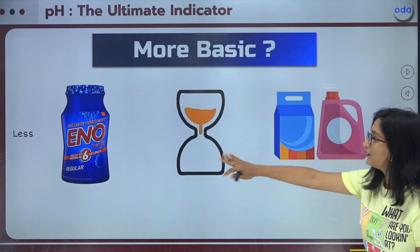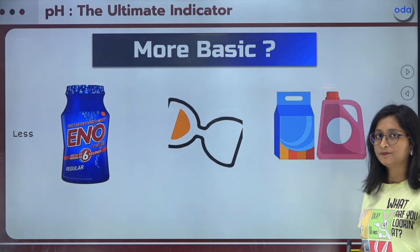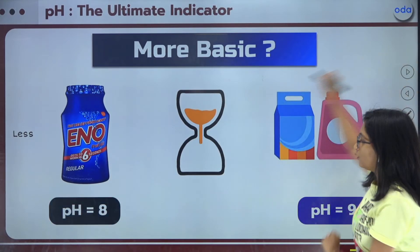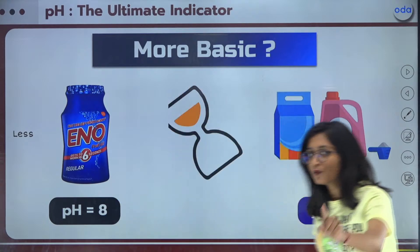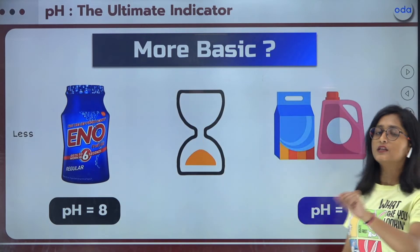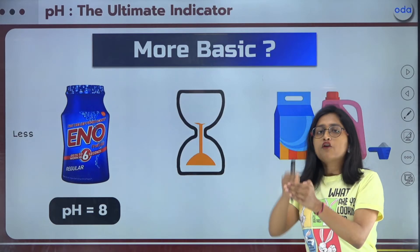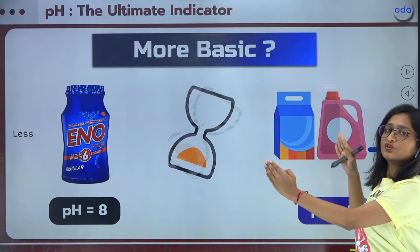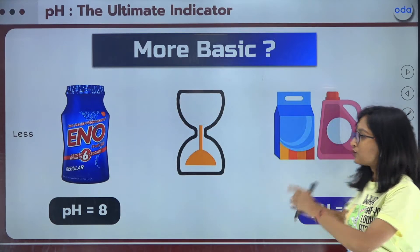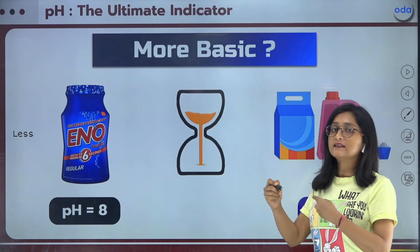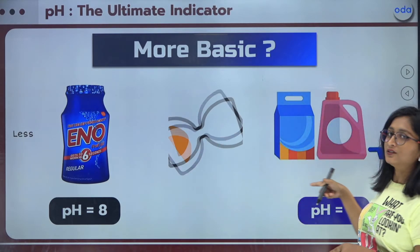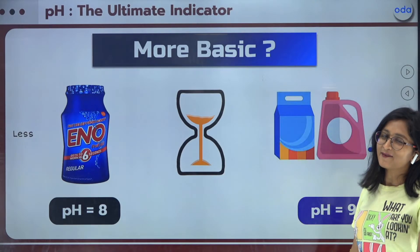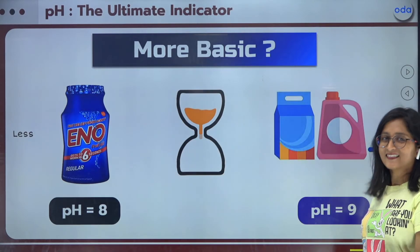Here we have ENO and detergent. The pH value of ENO is 8 and the detergent has a higher pH value. In the case of bases, more the pH, more basic the strength. So which is more basic — ENO or the detergent? The detergent is going to be the winner because it has a higher pH value.